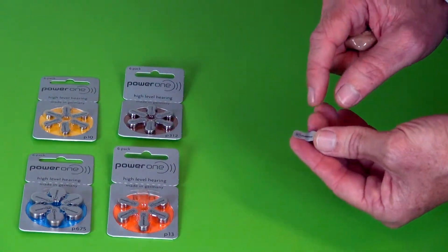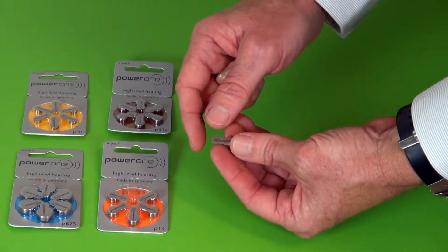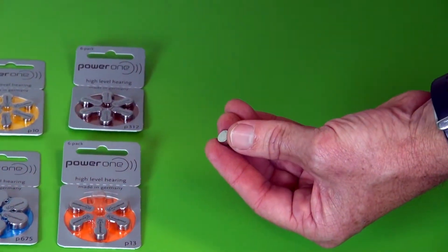To activate your battery you need to peel the sticker off the battery. That will turn it on.